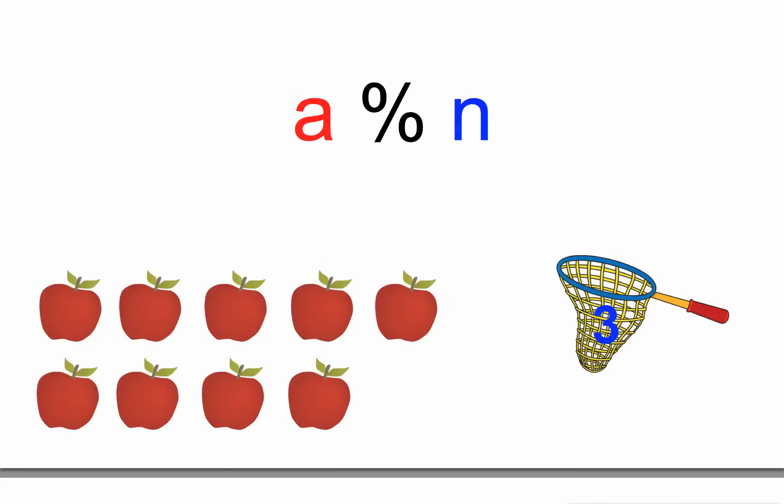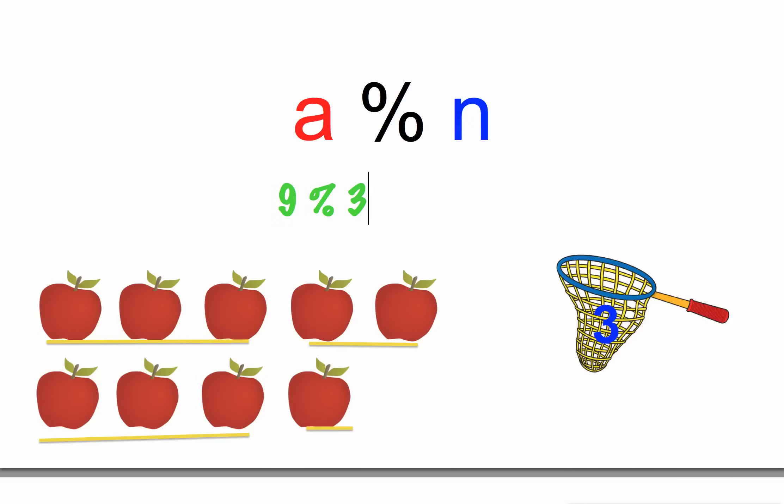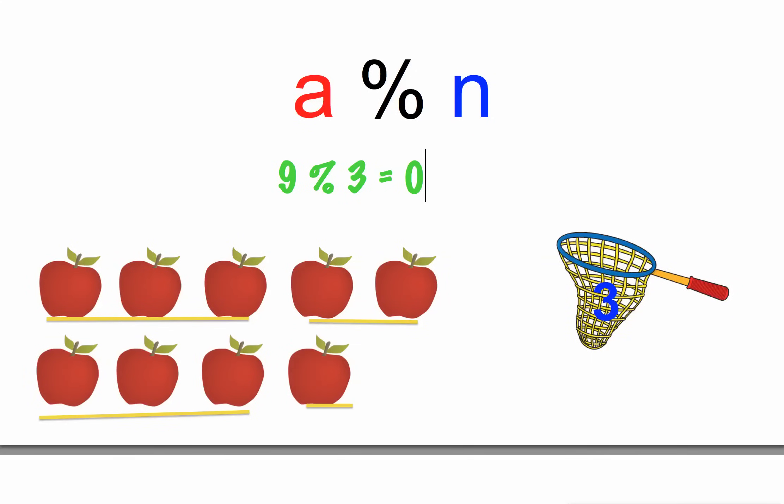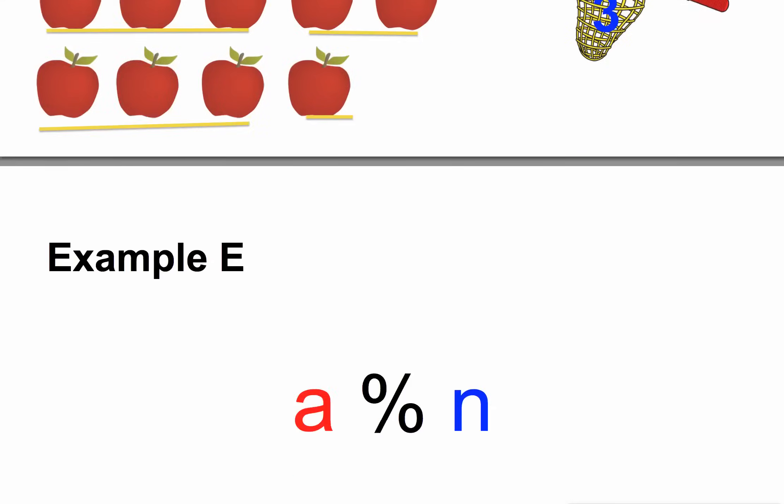Well, what happens if there are exactly nine apples? Nine apples, again, it would look like he can scoop up three in his net. He can divide that again. And wow. So, when you have a number that perfectly divides, what is the result of the statement? Yeah, nine modulo three equals zero. Okay, so that's when you get a zero as an example. Let's take it a step further.